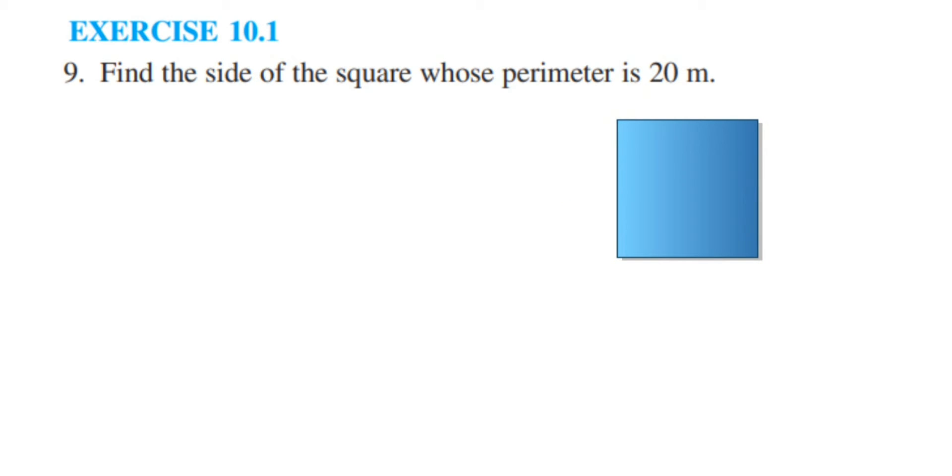So what is given? They have given perimeter of square. Perimeter is equal to 20 meters. But we know perimeter of square is 4 times side.